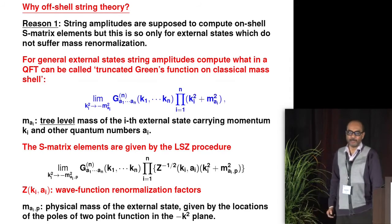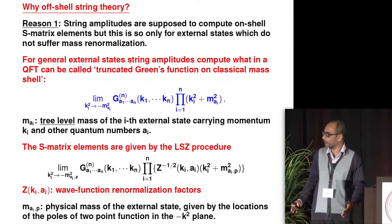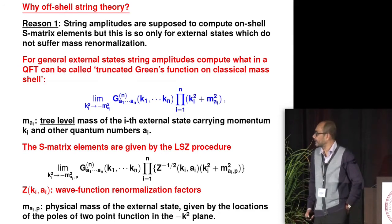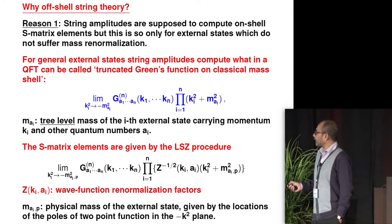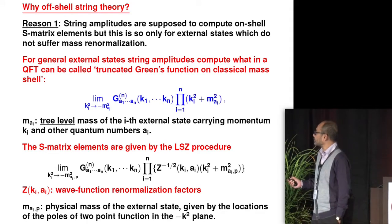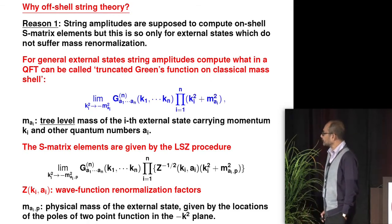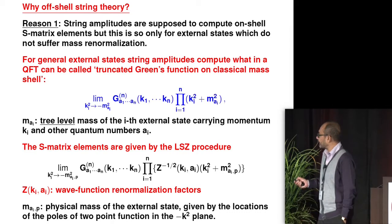Let me begin by motivating why we need off-shell string theory, and what are the kinds of problems we want to address in the context of string perturbation theory. Now, we all believe that string amplitudes are supposed to compute on-shell S-matrix elements. But if we look at string amplitudes directly, this is so only for external states which do not suffer mass renormalization. If we look at general external states, then what string amplitudes compute is what in a quantum field theory can be called a truncated Green's function on classical mass shell.